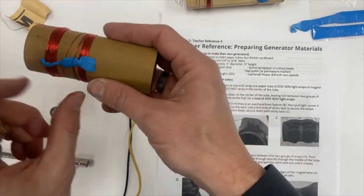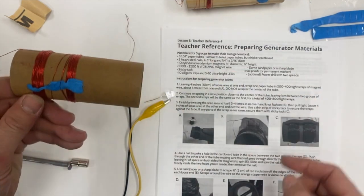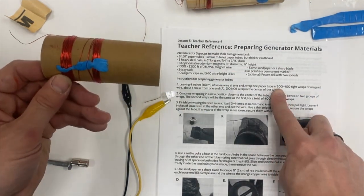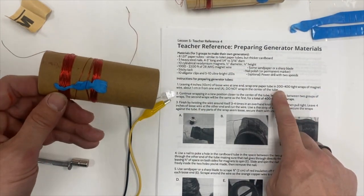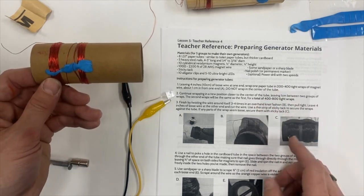Remember each side is going to have half the total number of wraps, so if I did 200 wraps on one side, that means I'm going to end up with a total of 400 wraps.